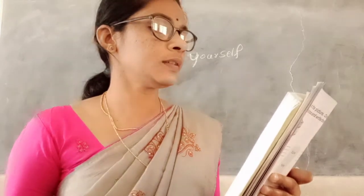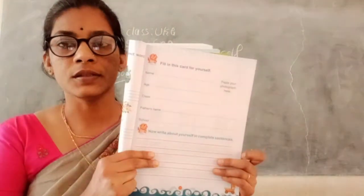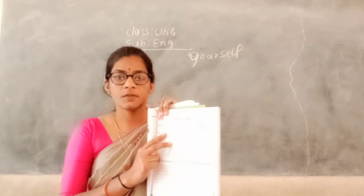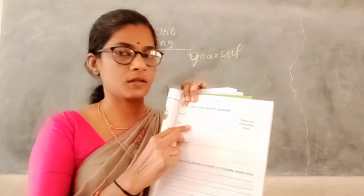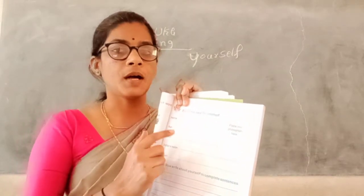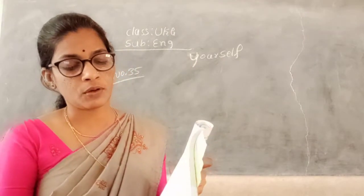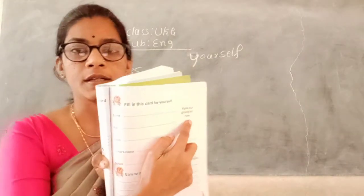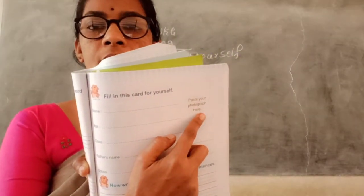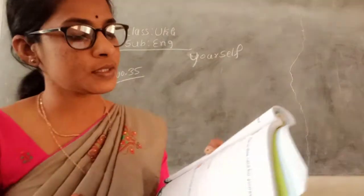Open your textbook page number 35. Look at here — what is given here? Fill in this card for yourself. This is your card. Take your parents and fill in this card. Paste your photograph here. You will paste it.